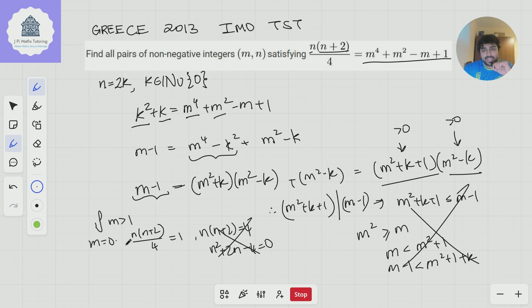The other thing is then when m is 1. When m is 1, what does this thing here become? You get n(n+2)/4 = 1 + 1 - 1 + 1, which is 2. So you get n(n+2) = 8. And that just means that n is 2. So we only have one solution to this equation, namely when m is 1 and n is 2.